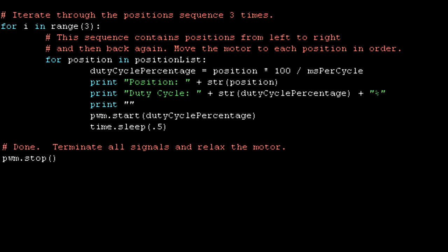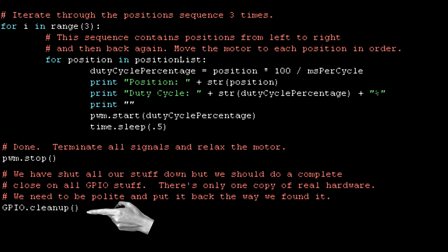When those loops have finished executing, we send a stop signal to the PWM to terminate the signal and relax the motor. Most importantly, when we're finished with the hardware, we relinquish all control of it to any other processes that might be trying to use it.